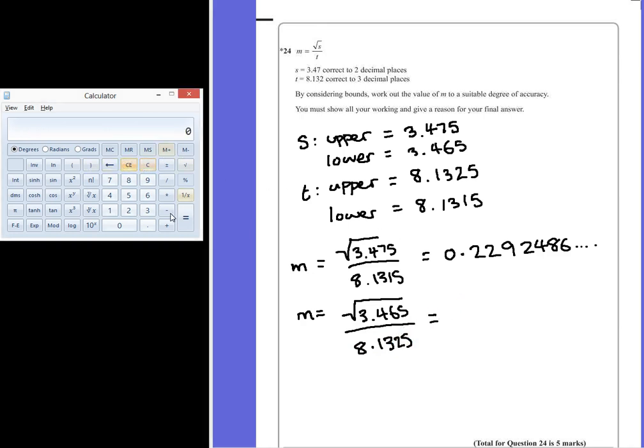Going back to our calculator, we have 3.465 square root it, divide by 8.1325, which is equal to 0.22889038 and a bunch of other numbers.